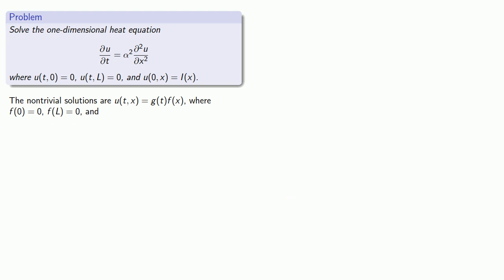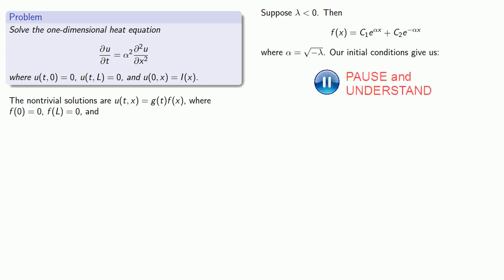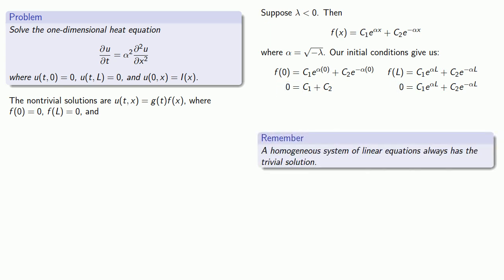How about those lambdas? Well, lambda has two possibilities. Suppose lambda is less than 0. Remember, the value of lambda determined the form of f of x. If lambda is less than 0 then f of x will just be an exponential function where alpha is square root of minus lambda. And we have our initial conditions f of 0 equals 0. So we can substitute those into our function. And we have a system of equations that we can solve for c1 and c2. Now you can solve this algebraically but a little cleverness never hurts. Notice that this is a homogeneous system of equations and a homogeneous system of linear equations always has the trivial solution.